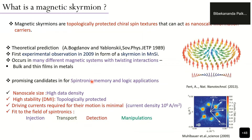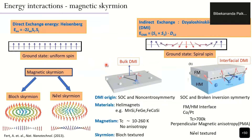Magnetic skyrmions are topologically protected chiral spin structures that can act as nanoscale information carriers. Theoretically predicted in 1989, they were first experimentally observed in 2009 in MnSi crystal structures. They are promising candidates for spintronic memory and logic applications due to their nanoscale size enabling high data density, high stability from DMI interaction providing topological protection, and low driving current requirements compared to domain walls.